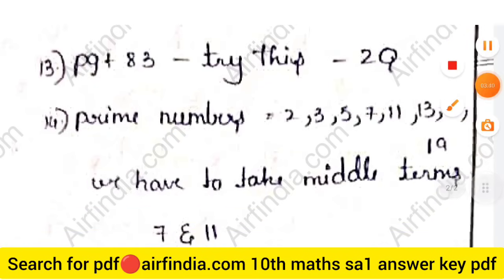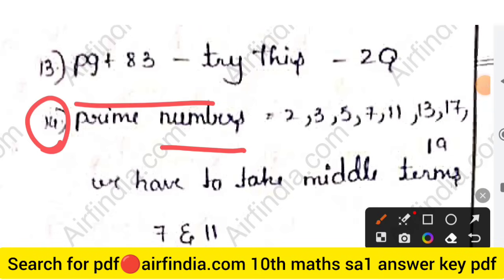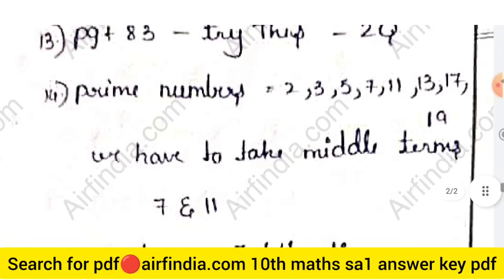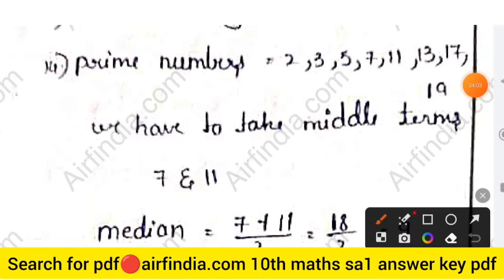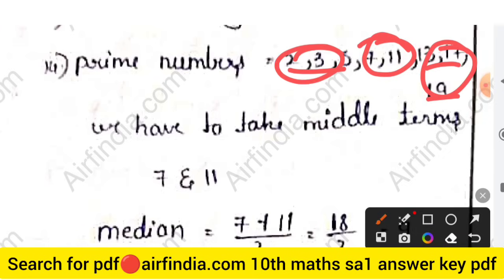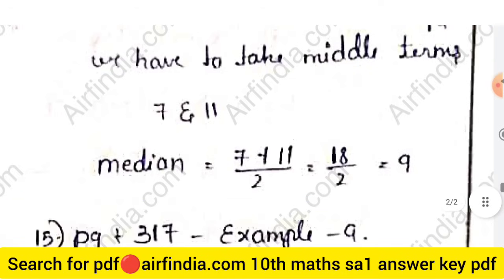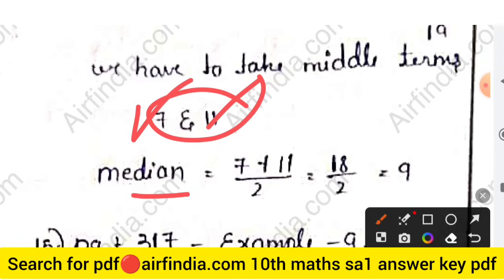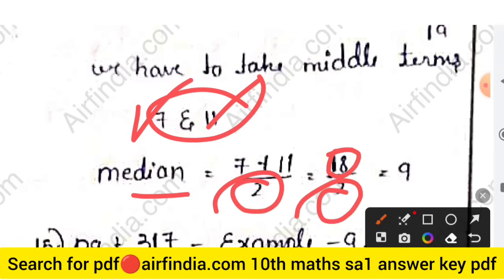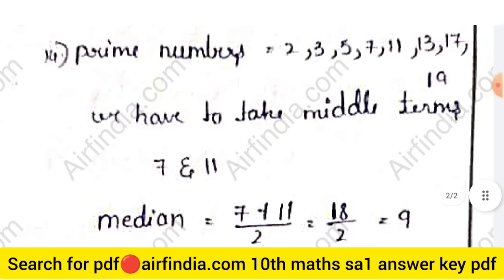For Question 14, we list prime numbers: 2, 3, 5, 7, 11, 13, and 17. Since there are seven numbers, we take the middle terms. The two middle terms are 7 and 11. The median is (7 + 11) ÷ 2 = 18 ÷ 2 = 9. So 9 is the median of the prime numbers.